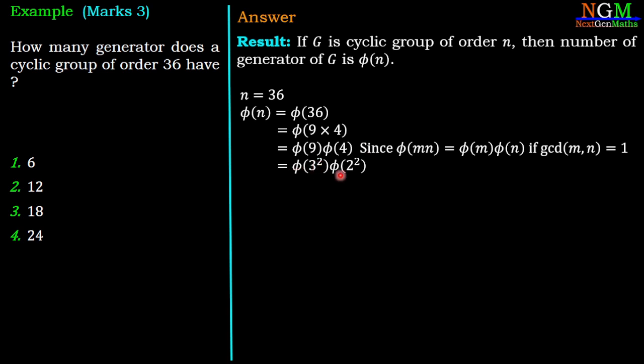We can rewrite as φ(3²) × φ(2²). We have a property of the phi function which is φ(p^k) equals p^k minus p^(k-1). Here p is a prime number.